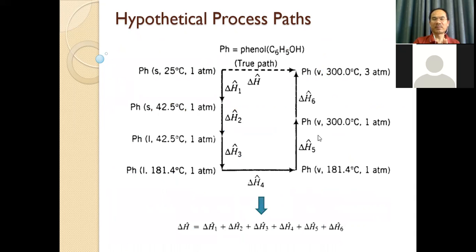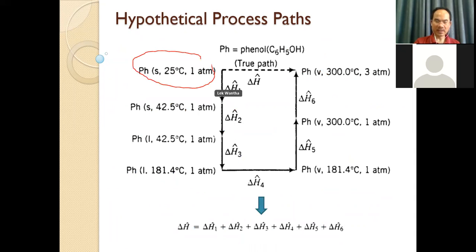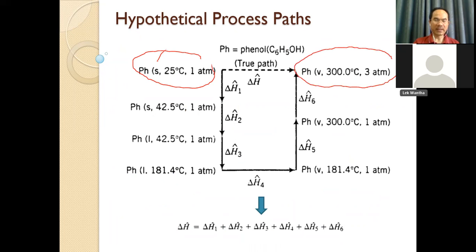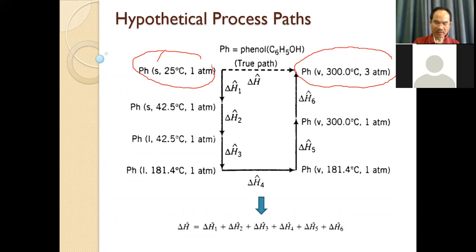Let me give you some examples. If we start from phenol at 25°C, 1 atm, in the solid phase — for this case, the phenol in solid phase converts or changes to phenol in vapor phase at 300°C and 3 atm. These are two states, but for this direct path we cannot calculate the entropy or internal energy.